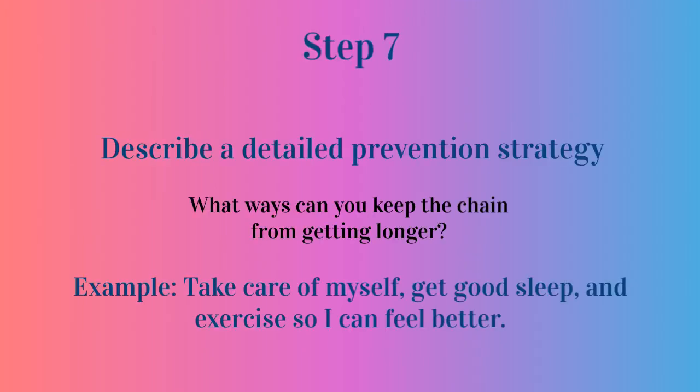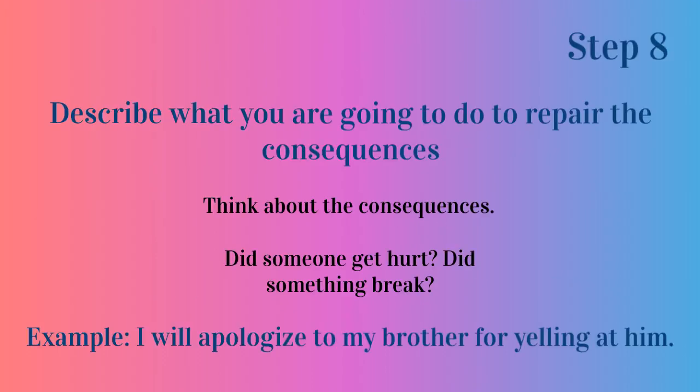Step 7: Describe a detailed prevention strategy — ways that you can keep the chain from getting longer. For example, take good care of yourself, get good sleep, and exercise. Step 8: Describe how you're going to repair the consequences. Did you hurt someone's feelings? Well, just go ahead and apologize.